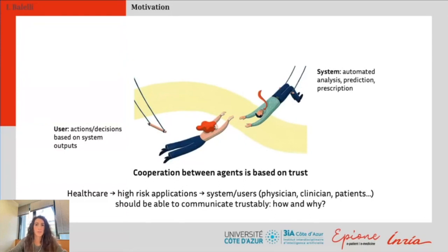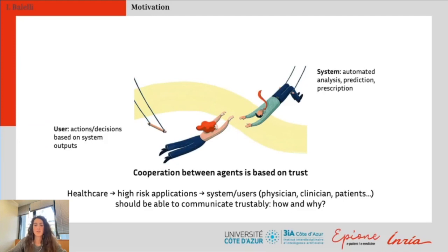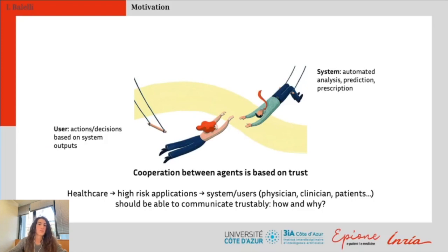These applications range from modeling and prediction to further time points, or personalization of treatment and prescription. In this context, we can consider two agents: on one side, the system — consisting of the model part and the algorithmic part, typically developed by a researcher to address a specific research question — and on the other side, the users, which can be physicians, clinicians, or even patients, who must take actions and make decisions based on the system output. These agents should be able to work cooperatively between system and users.